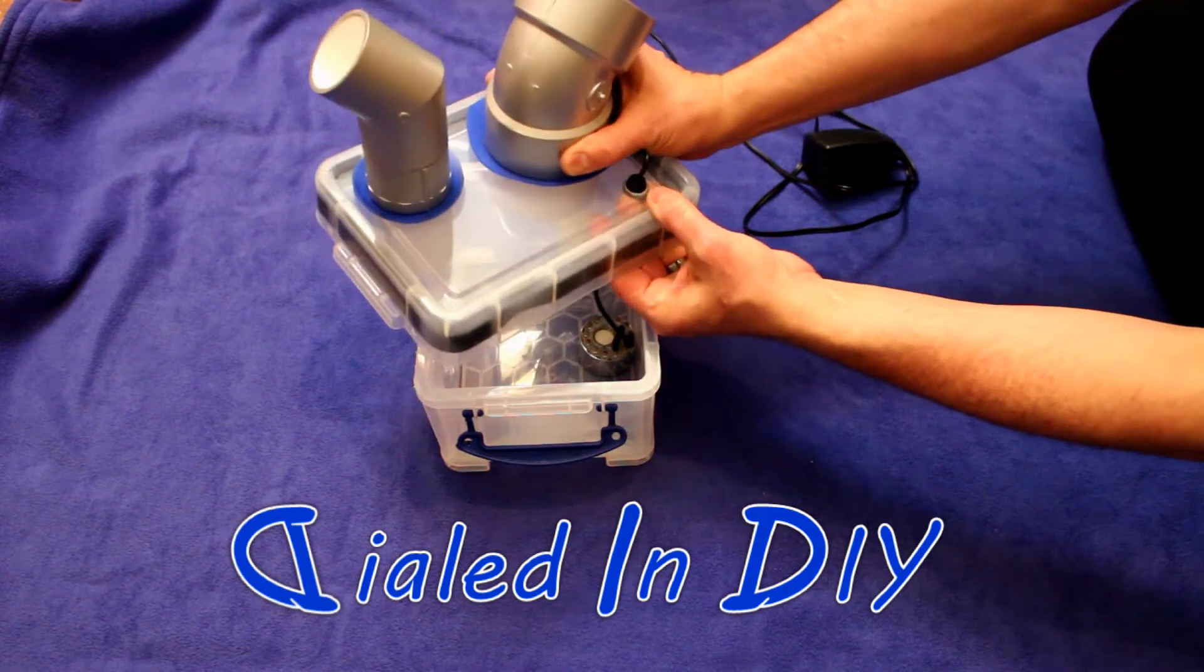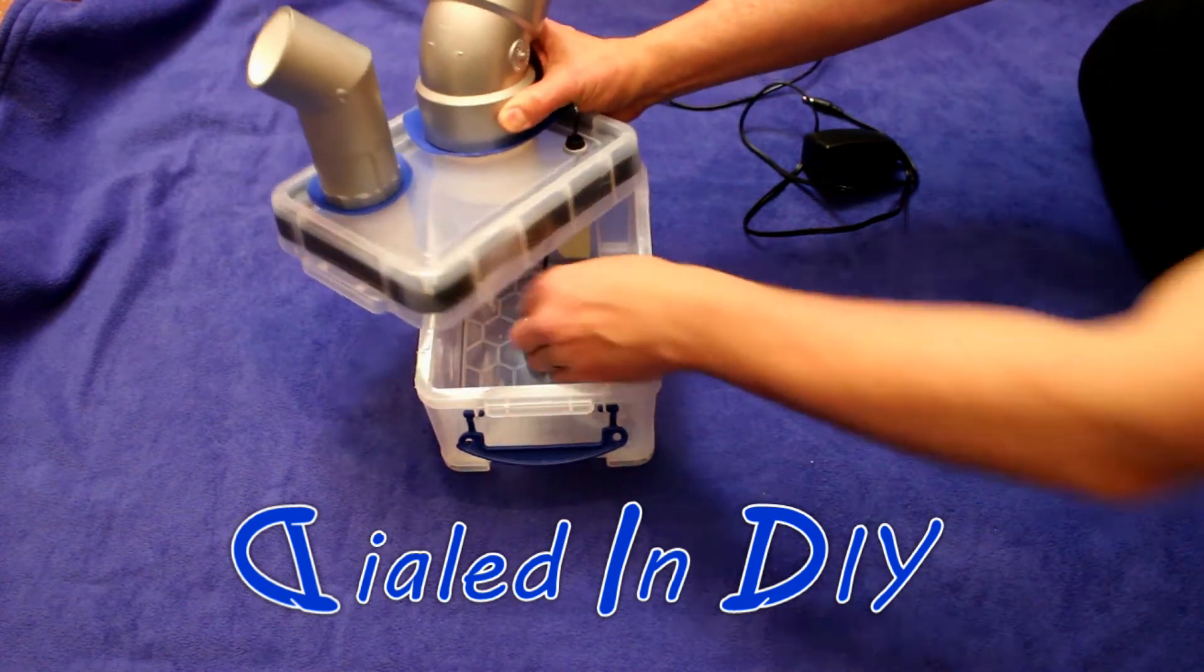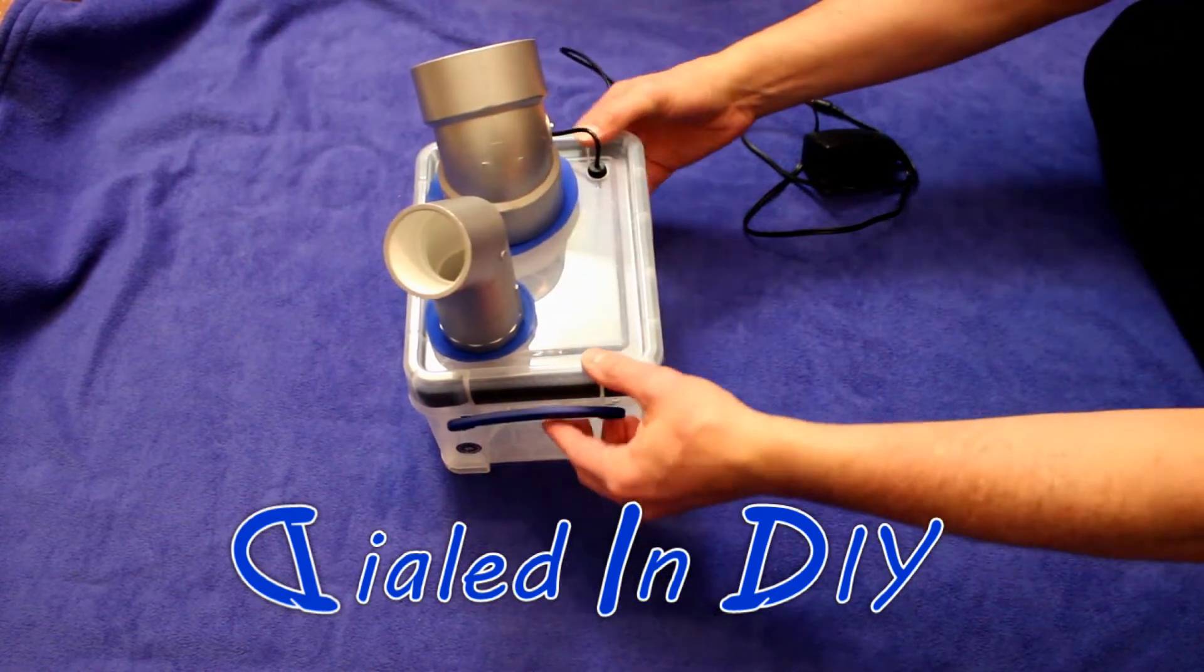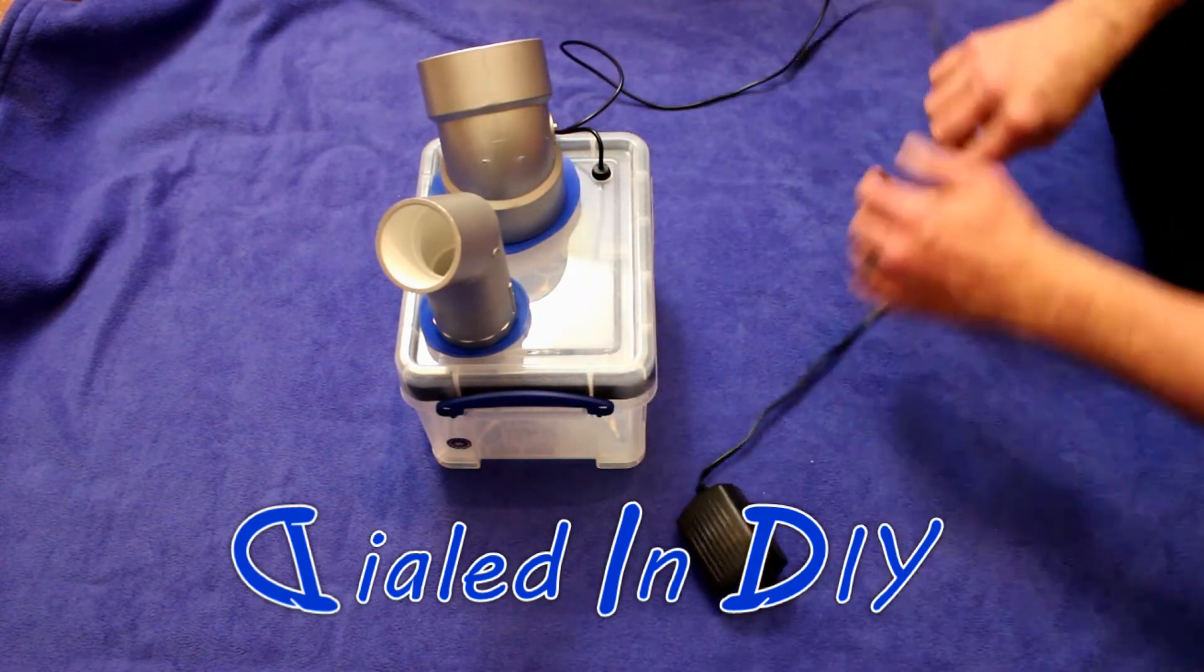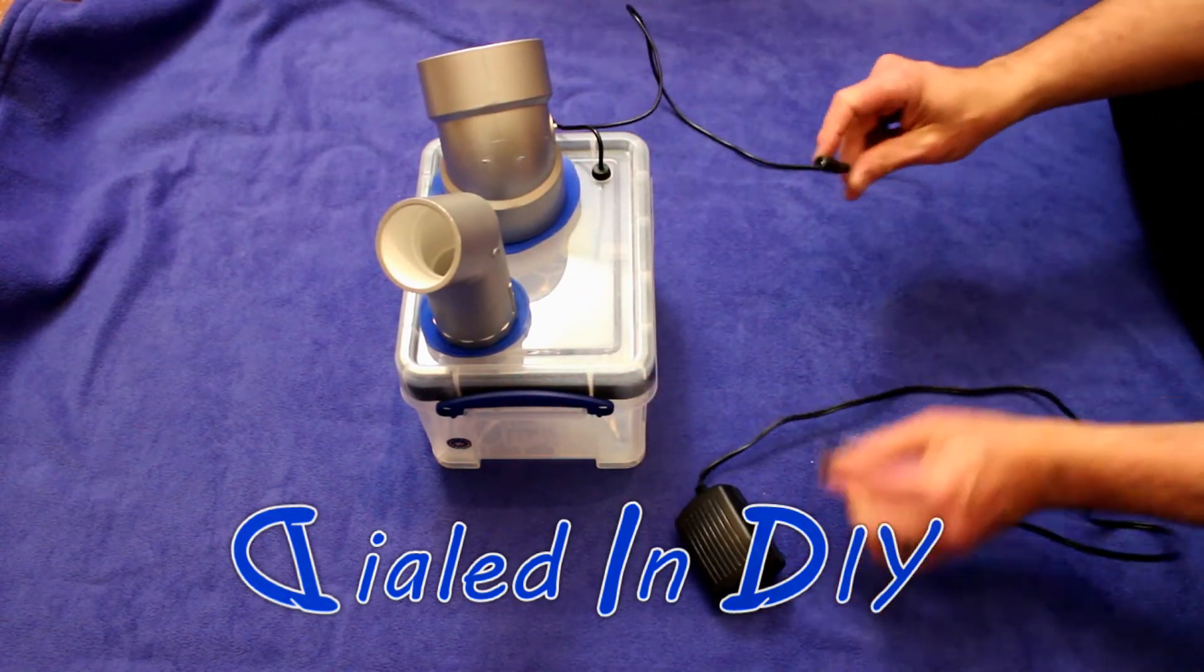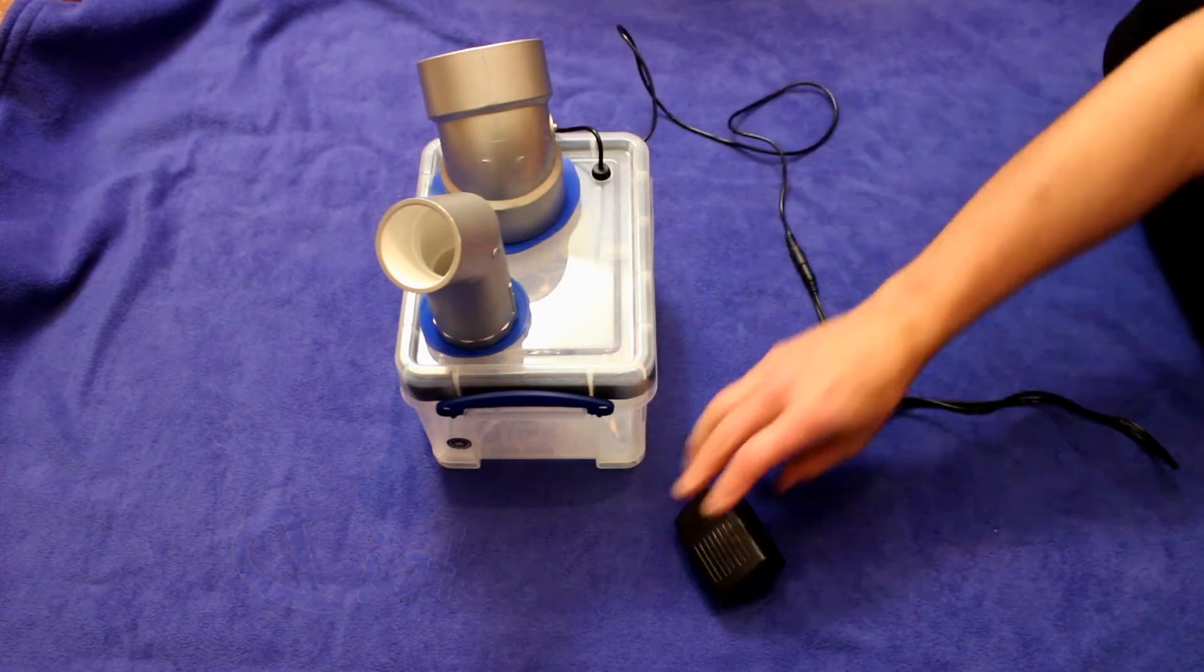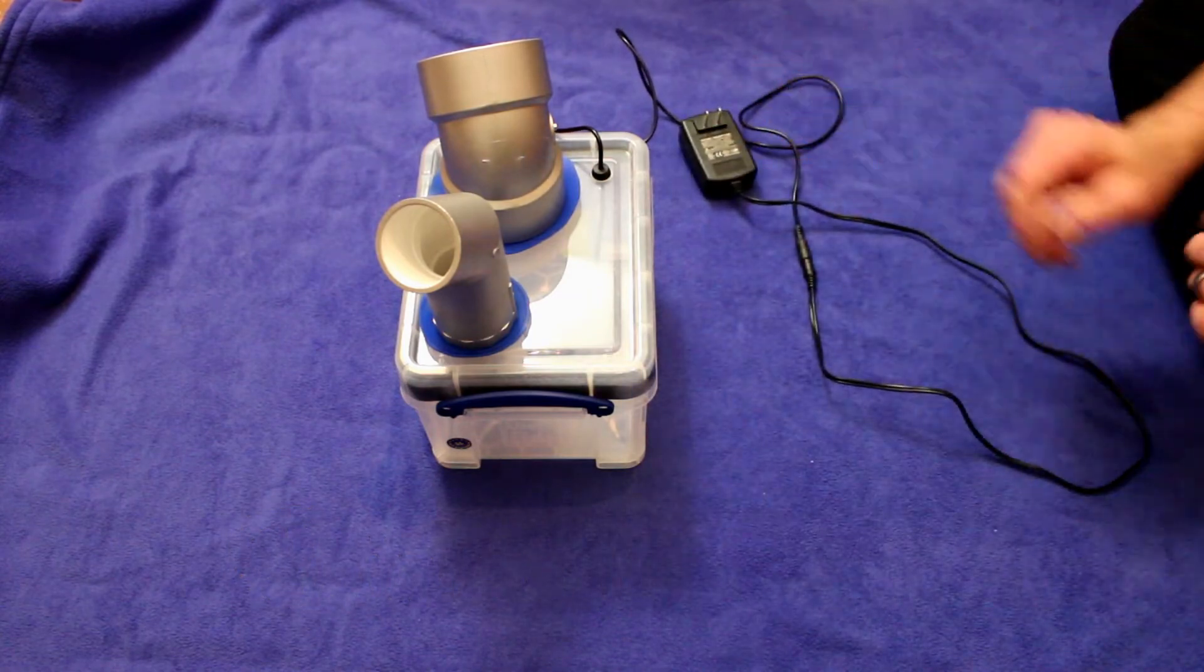And then just feed the power cord through the hole that we put on the side here, until we can push the little rubber stopper through. I situate this right about in the middle, and again close it up and over, and that is all there is. Connect the power source, plug it into the wall, this part is complete.